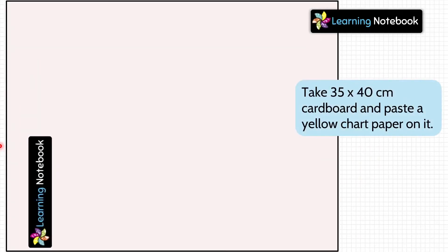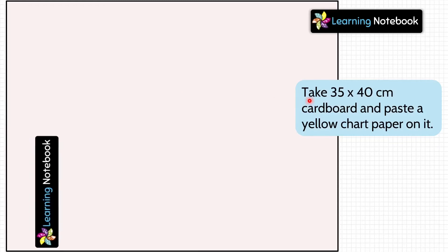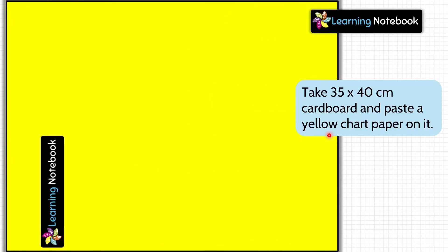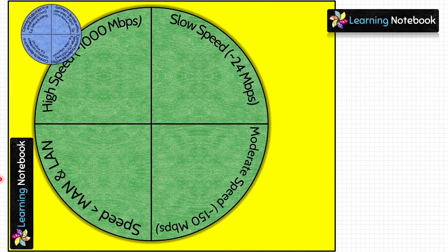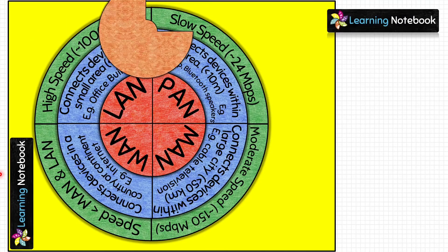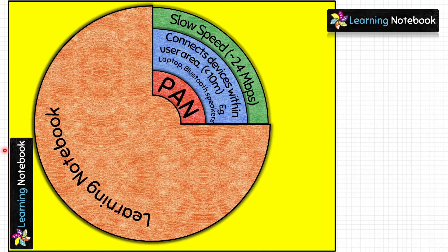Now we have done all the preparations for our working model, so let's assemble it. Take a cardboard of size 35 x 40 centimeters and paste a yellow chart paper on it. Take the three circles and place them on top of each other on this cardboard. Then take the orange circle and place it on top, making sure to match the centers of all four circles.